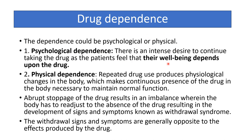Dependence types: psychological dependence is an intense desire to continue taking a drug because the patient feels well-being depends on it. Physical dependence: repeated drug use produces physiological changes that make the continuous presence of the drug necessary to maintain normal function. Abrupt stoppage results in withdrawal symptoms, which are generally opposite to the effects produced by the drug.